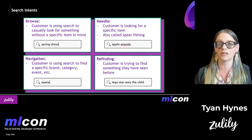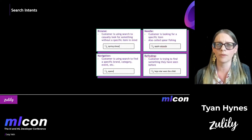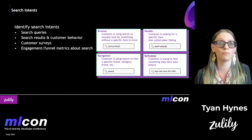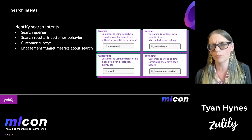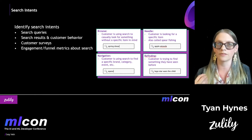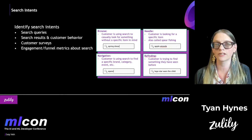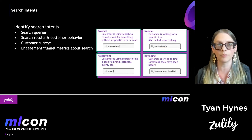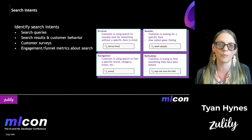How do we really get information about what intent a customer has? There are many different pieces of information we can use to identify intent. We can look at the search queries themselves — browse queries tend to be more generic, while needle queries are very specific. We can also look at search results and customer behavior: if somebody types in 'spring dress,' we can look at what items they click on, what product detail pages they visit, and what other actions they take. That gives us understanding about what they mean with that particular intent.